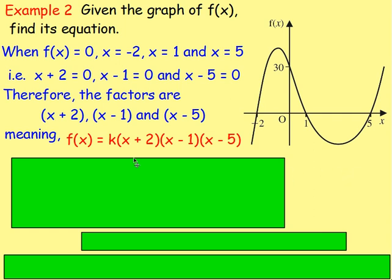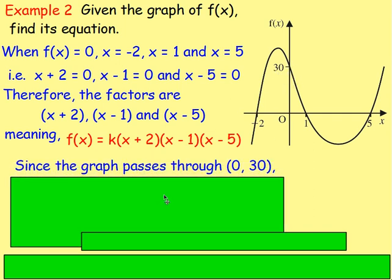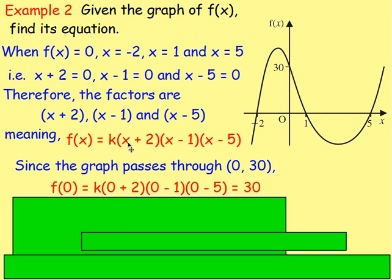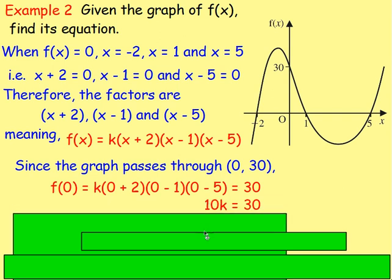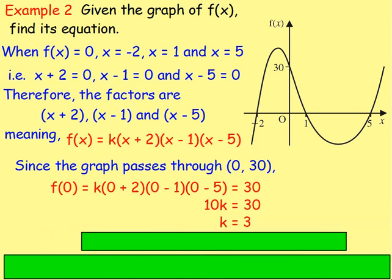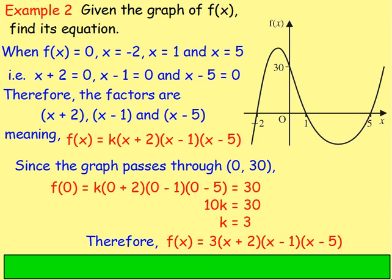We've got three factors, so the equation is f of x equals k times x plus 2, times x minus 1, times x minus 5. We need extra information to work out k, so we look for another point. We have the point 0, 30. When x is 0, y is 30. Substitute in: f of 0 equals k times 0 plus 2, times 0 minus 1, times 0 minus 5, equals 30. That gives 10k equals 30, so k equals 3. Therefore the equation is f of x equals 3 times x plus 2, times x minus 1, times x minus 5.